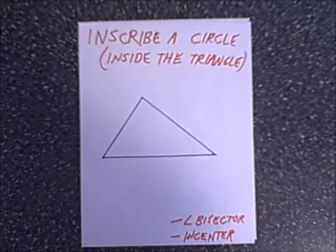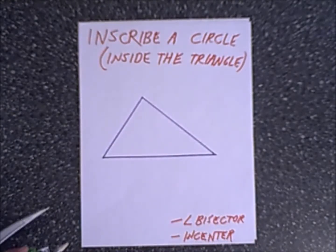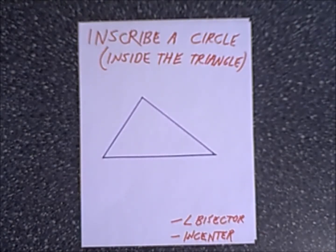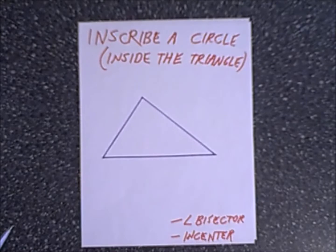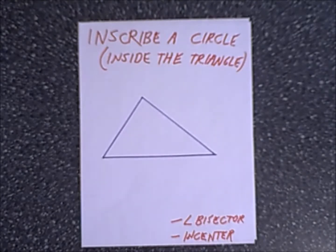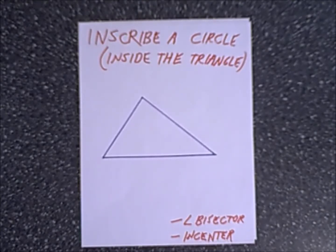Now let's change it up. In this case, we are going to inscribe a circle inside the triangle. It's very similar to the other method, but instead of starting with the perpendicular bisectors of the sides, we are going to use the angle bisectors of the angles. They will intersect at a point inside the triangle called the incenter. From the incenter, we construct three line segments that are equidistant to the sides, and since those three segments are equidistant, they form the radii of the inscribed circle.